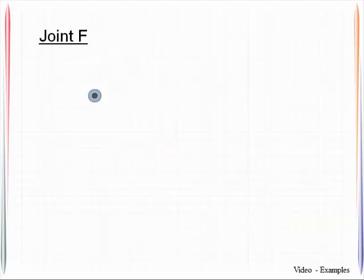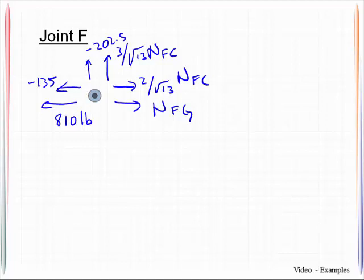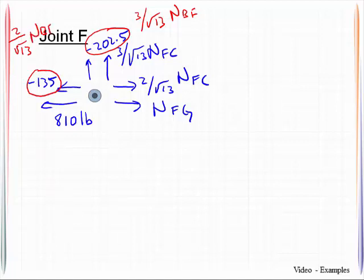So let's move on to joint F. Let's get our unknown quantities on here: 3 over the square root of 13 NFC, 2 over the square root of 13 NFC. We also have NFG coming in. We have a horizontal member coming in here, and that has 810 pounds. And then you also have the vertical and horizontal components of bar BF coming in. This will give us negative 135 and this one will give us negative 202.5.